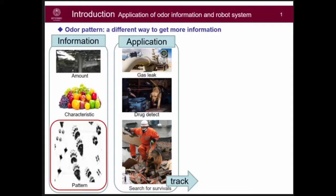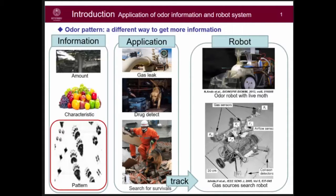Automatic tracking through odor has been a hot topic for a long time. For example, this is our odor robot with a live mouse as its core, which can take a pheromone trace at an extremely low level. And this is a tracking robot which can find gas sources in a plume with semiconductor sensors.